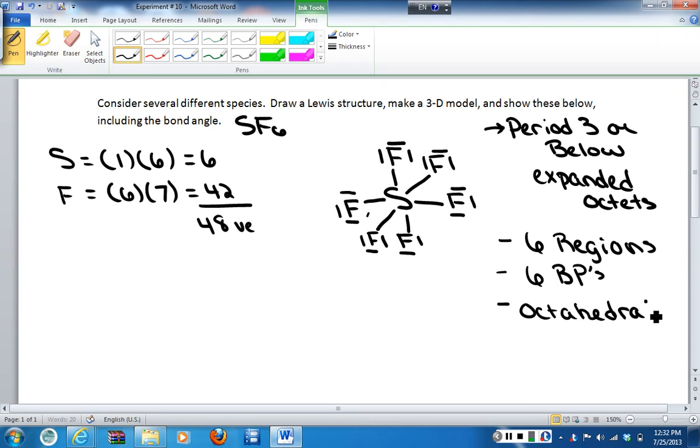And with octahedral, we know that we have a bond angle of 90 degrees. Now when generating a 3D model of an octahedral structure, what we have is our central atom, and we have two bonds that are in plane. Then we have two that go behind the plane, and two that come out of the plane. So this is the general structure that you use for anything that has 6 regions of electron density.